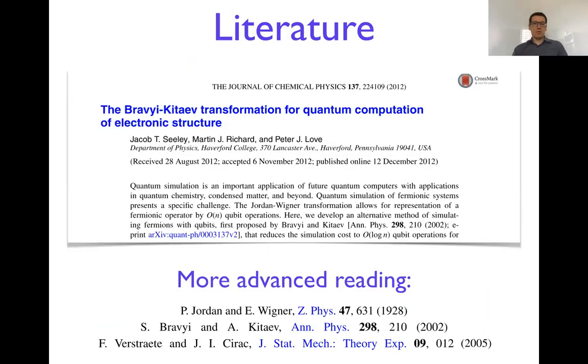As for literature, there is this nice paper written by Peter Love's group that talks about Bravyi-Kitaev transformation but also discusses Jordan-Wigner and other transformations. I think that this is one of the easiest papers to understand, especially if you are just starting, and I highly recommend this as an entry level source for understanding the mapping between fermions and qubits.